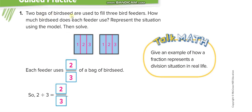Another example: two bags of bird seeds are used to fill three bird feeders. How much does each feeder use? There are two bags and three feeders, so we divide two bags among three feeders. The answer is two-thirds.